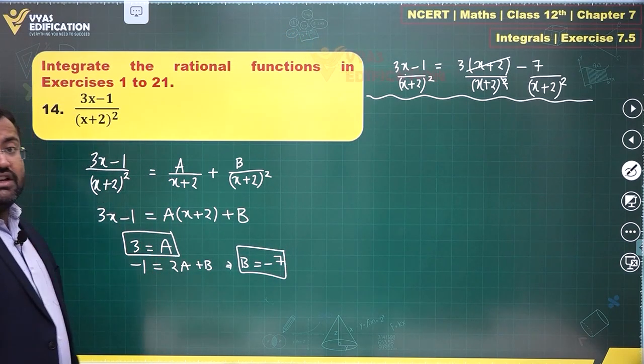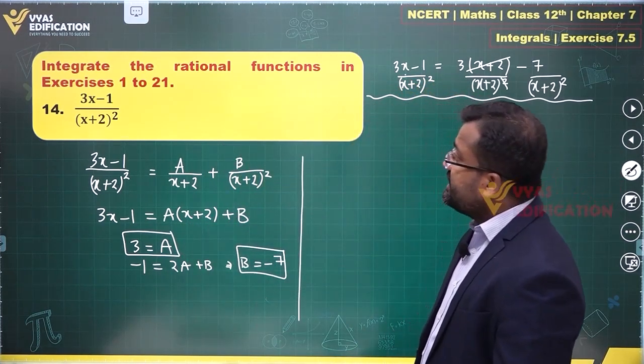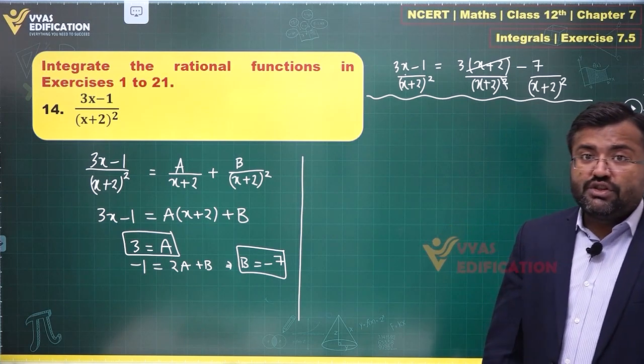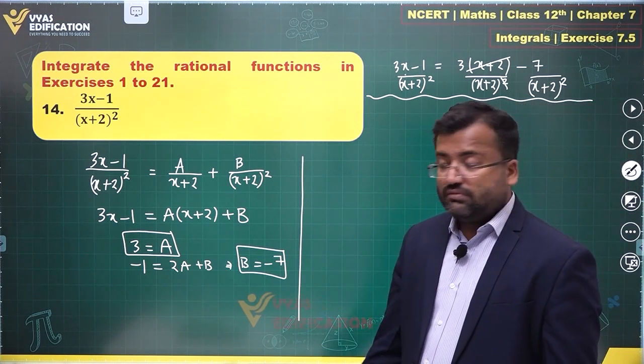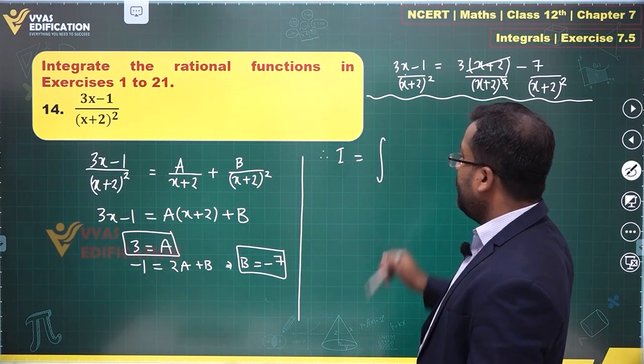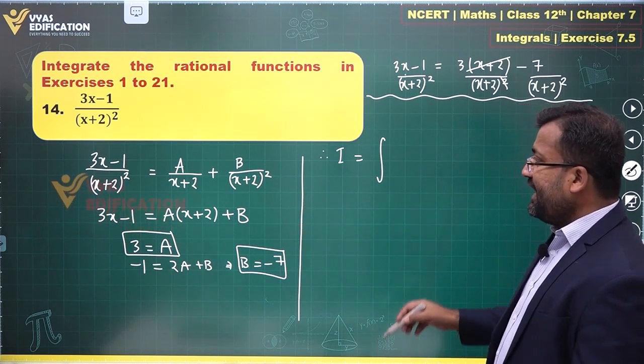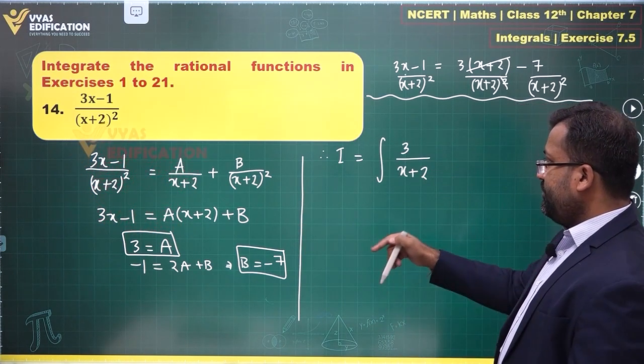B is equal to minus 7, A is equal to 3. So in the 14th question we have 3x minus 1 upon x plus 2 whole square and we have converted them into partial fractions. Therefore, integral I will be equal to integral of 3 upon x plus 2, and B is minus 7, so minus 7 upon x plus 2 square with respect to x.